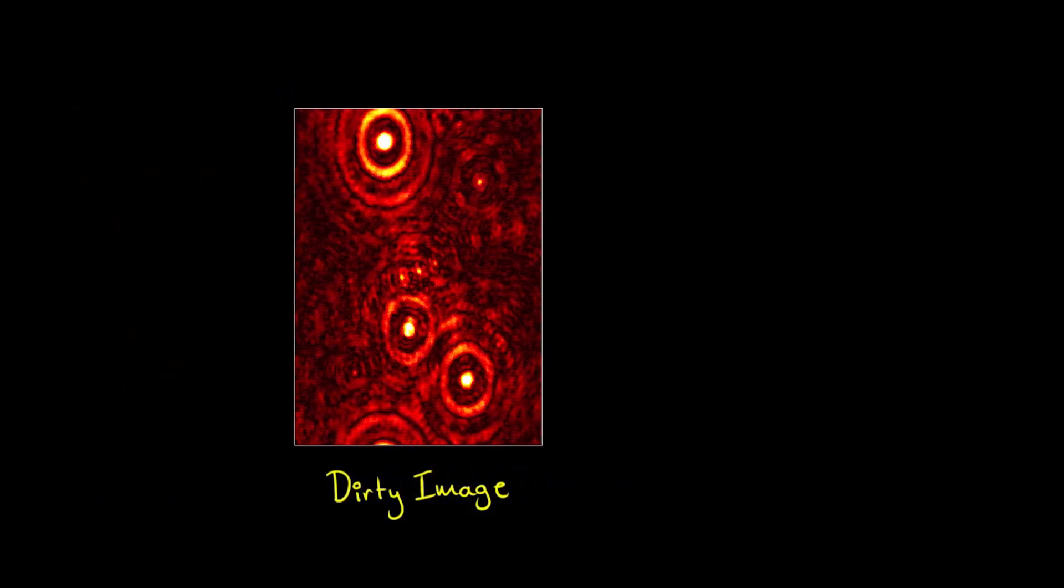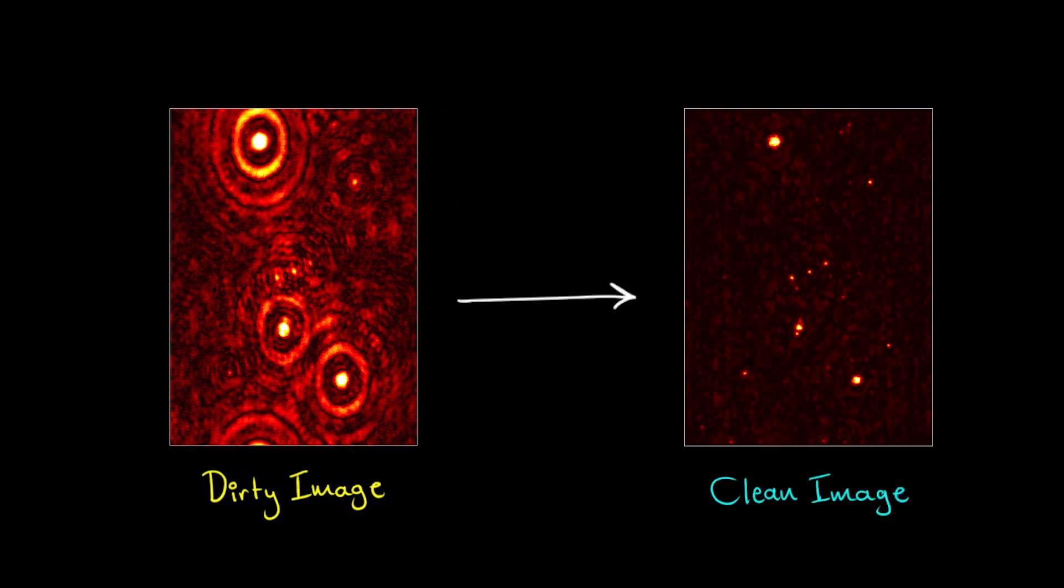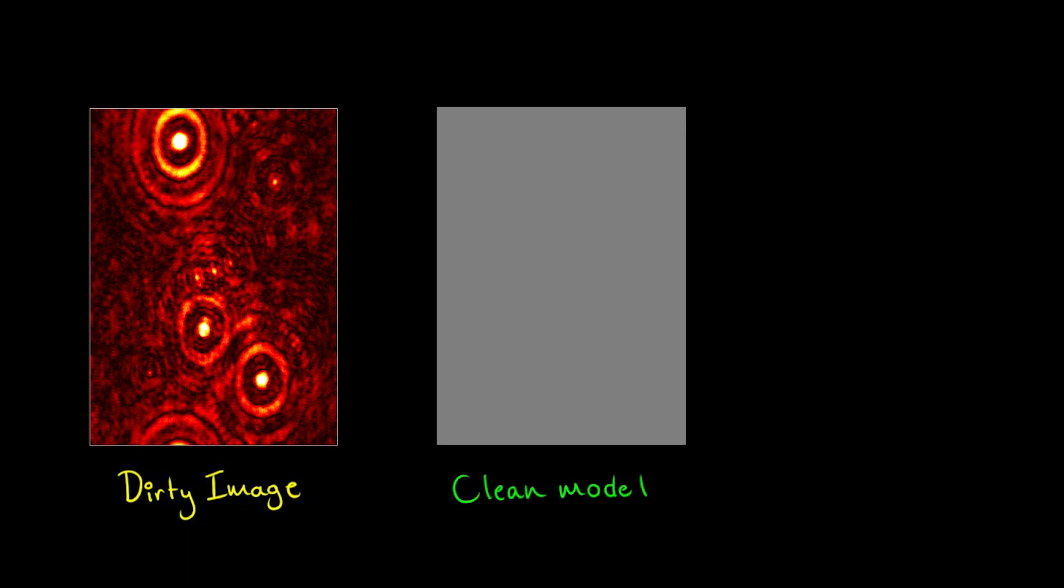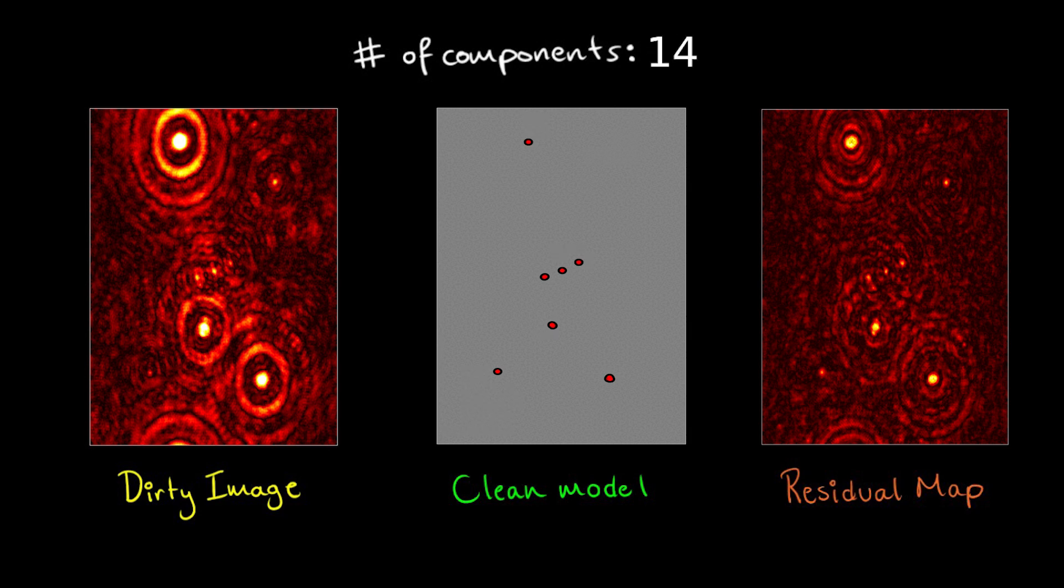The CLEAN algorithm iteratively builds a model of the true sky brightness distribution by assigning CLEAN components to the brightest emission, subtracting each component convolved by the point spread function from the image, and repeating that process.